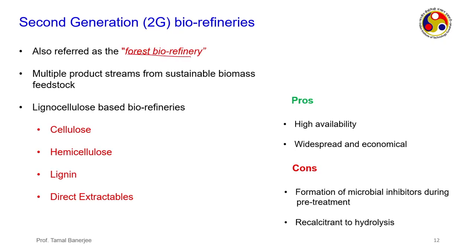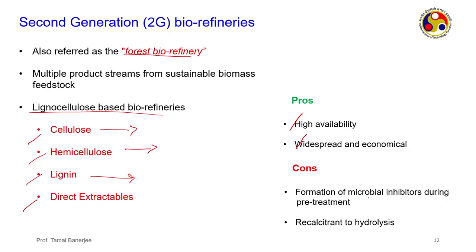Second generation bio-refineries are forest bio-refineries producing multiple product streams. For a lignocellulose-based bio-refinery you can have cellulose as one product, hemicellulose as another, and lignin and direct extractables — each can be further converted into useful chemicals. The forest biomass is easily available, widespread, and economical because there may be non-arable land where these crops can be grown. But the problem is during pre-treatment, inhibitors can degrade the cellulosic matter, and the hydrolysis — solubilising the hemicellulose part — is tricky, requiring controlled conditions with different enzymes, acid or alkaline treatments.